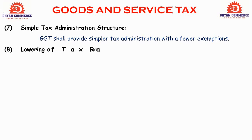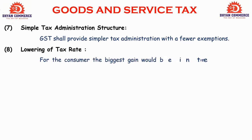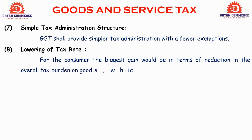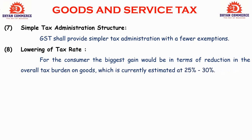Next benefit: lowering of tax rate. Previously under indirect taxes, the tax rates were very high, but under GST it has been simplified from 0% to 28%, and the tax slab is much lower. For the consumer, the biggest gain would be the reduction in the overall tax burden on goods, which is currently estimated at 25% to 30%. Customers now pay less tax — the tax burden on customers has reduced by approximately 25% to 30% due to GST.